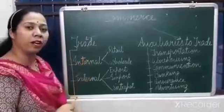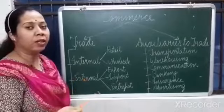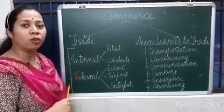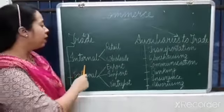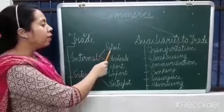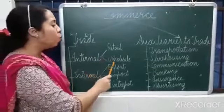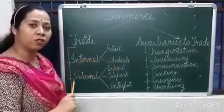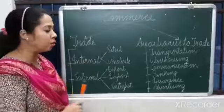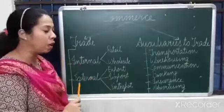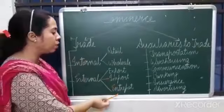So here we have completed the classification of trade. To recap: trade is of two kinds — internal trade, which is within geographical boundaries, and external trade, which is across geographical boundaries. Internal trade includes retail and wholesale trade. External trade includes export, import, and entreport.